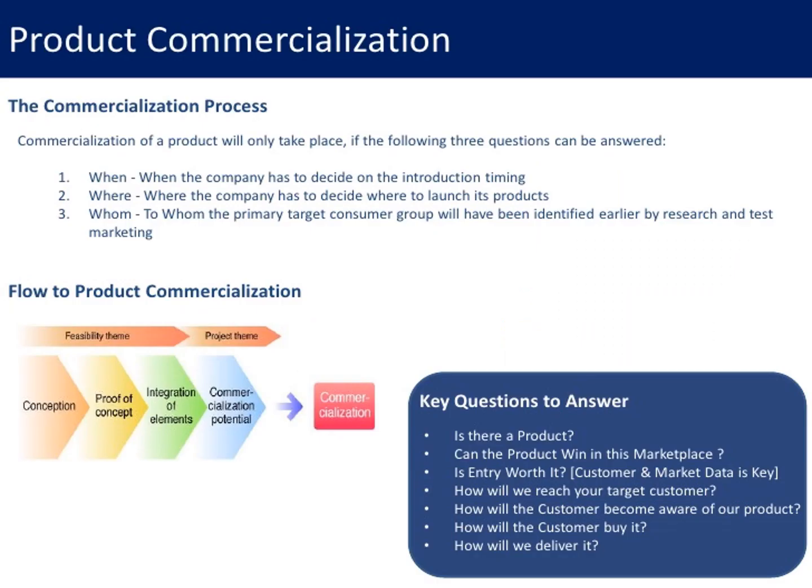The commercialization process of a product will only take place if three questions can be answered: when, where, and who. First, when — the company has to decide on the introduction timing. Second, where — the company has to decide where to launch its products. Third, who — the primary target consumer group, which will have been identified earlier by research and test marketing.